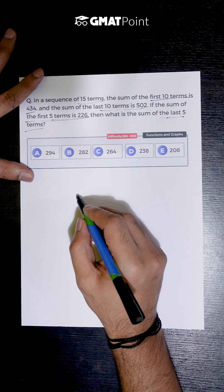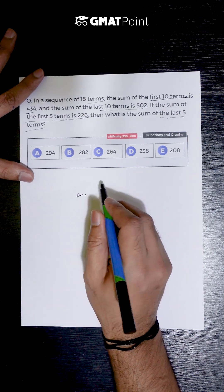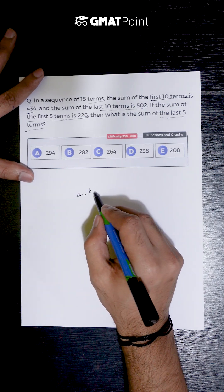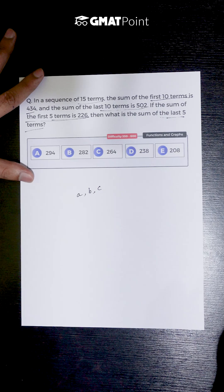So let us assume the sum of the first 5 terms to be a, the middle 5 terms to be b, and the last 5 terms to be c.